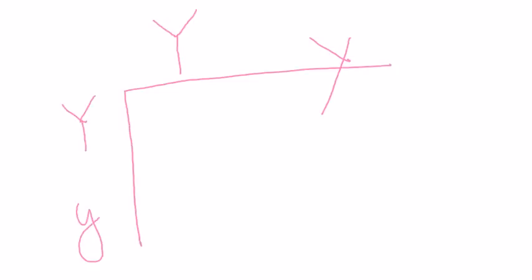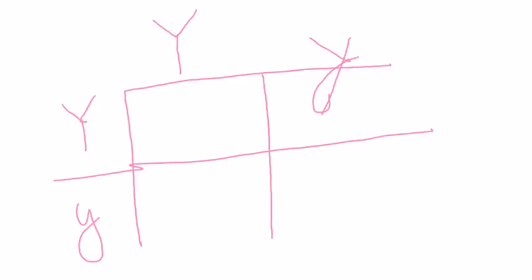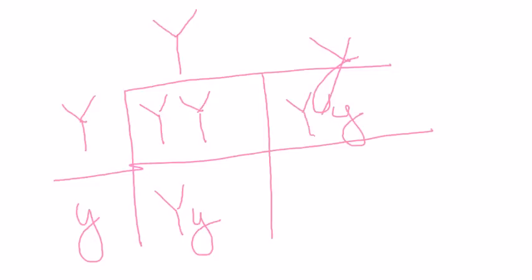In this case, you set up a Punnett square with two carrier parents — each is big Y, little y. You draw your Punnett square and you get: big Y big Y, big Y little y, big Y little y, and little y little y.